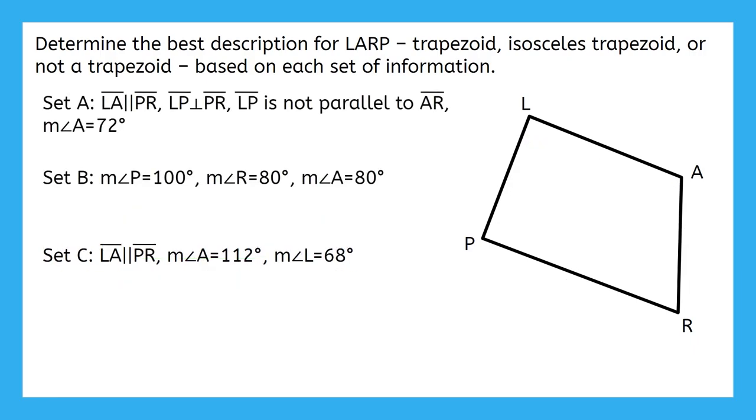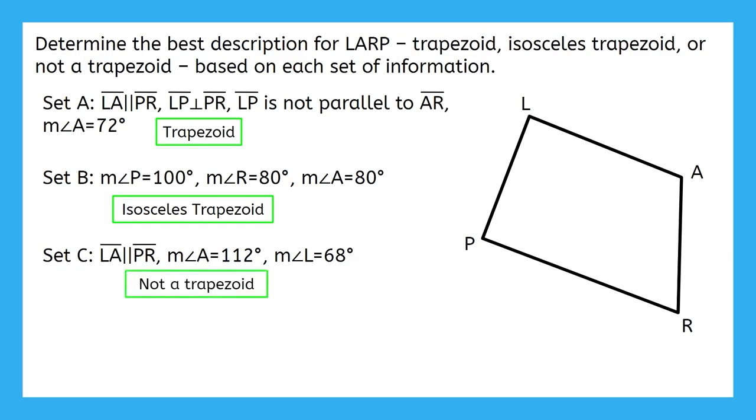Let's look back at our final answers. Set A was a trapezoid because it had only one pair of opposite sides parallel, and the opposite angles were not supplementary. Set B was an isosceles trapezoid because it had only one pair of opposite sides parallel, and the base angles were congruent. Lastly, set C was not a trapezoid at all because it had both pairs of opposite sides parallel.